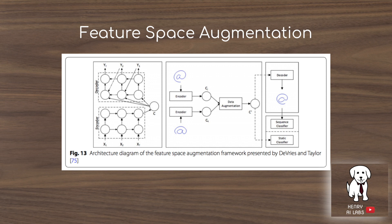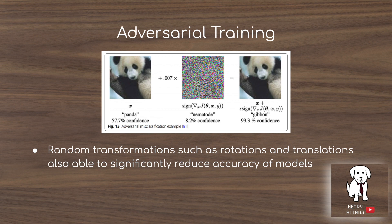Another interesting idea is feature space augmentation. Convolutional networks sequentially transform an image into a series of rank-3 tensors, where each dimension corresponds to the number of feature maps, height, and width. In this study, they augment the image representations in these intermediate tensors and then decode them back into the image space.